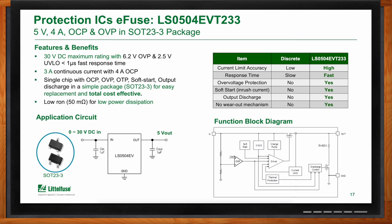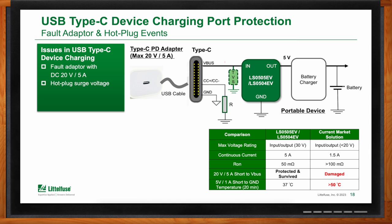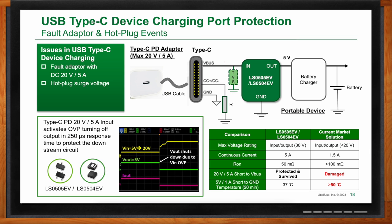One good application for these protection ICs is USB Type-C. If the device is not rated for the maximum voltage of 20 volts and an adapter is plugged in that can supply that voltage, the end device may be damaged. The protection IC will sense when the voltage goes above 5 volts and shut down, protecting the end application.